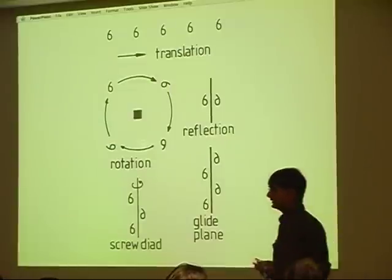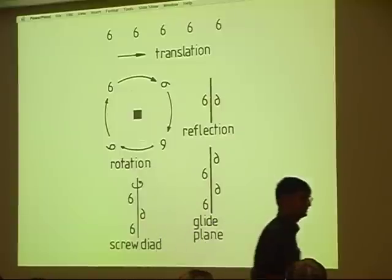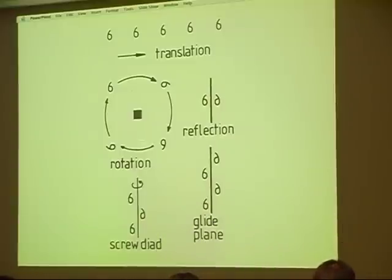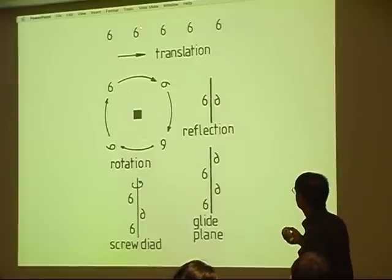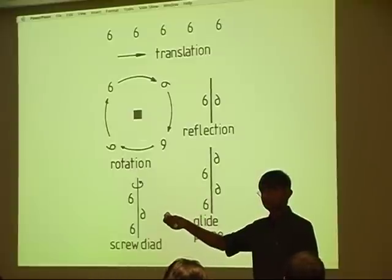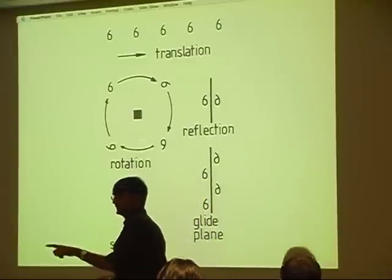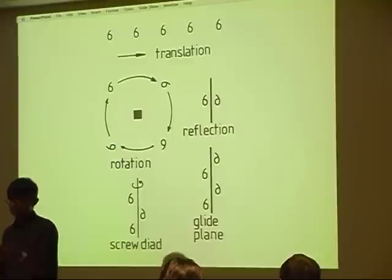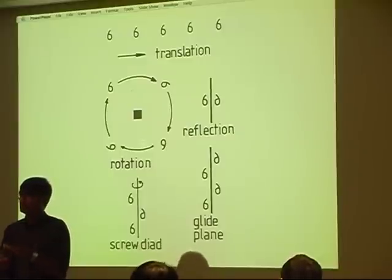We also need to think about the symmetry of lattices, because that determines many of the crystalline properties. We have translational symmetry because every lattice point is identical. So when we have slip deformation, when the Burgers vector of that dislocation is a lattice vector — that means it starts at the lattice point and finishes at the lattice point — then the slip doesn't change the crystal structure at all.